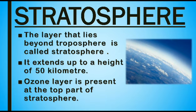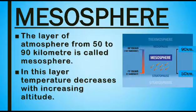Clouds, vapor, and dust are not found in the stratosphere region. The layer of atmosphere from 50 to 90 km is known as mesosphere. In this layer, temperature decreases with increasing altitude.